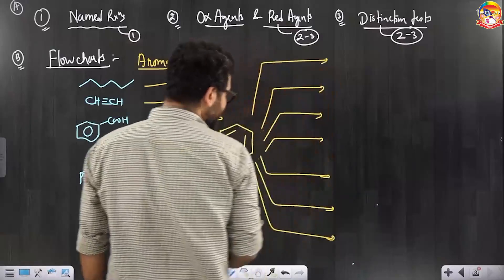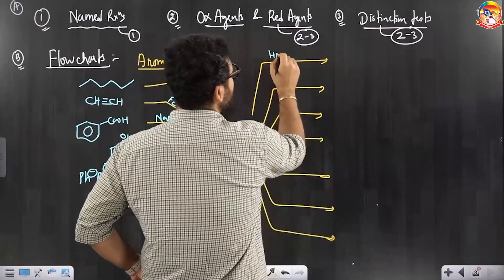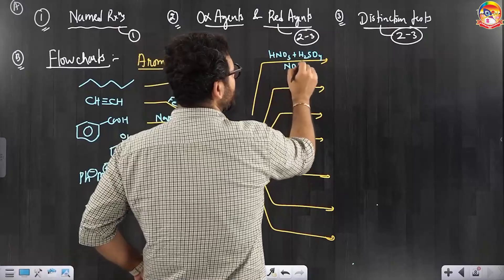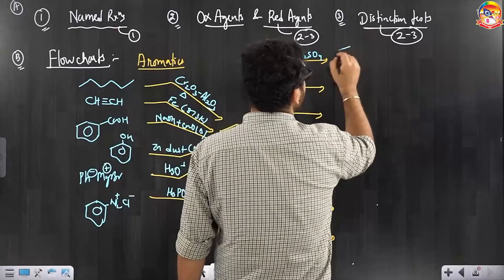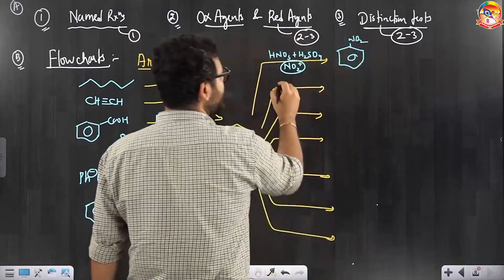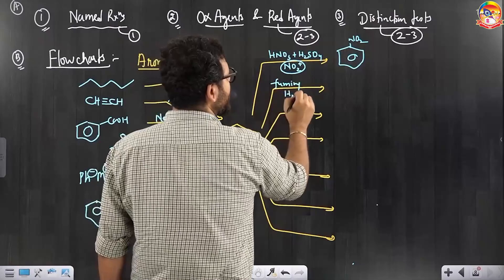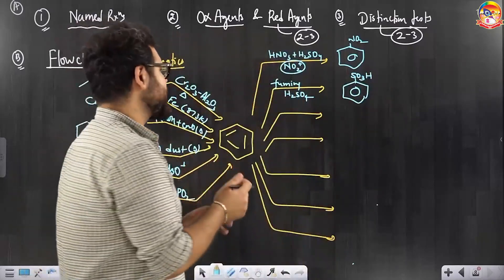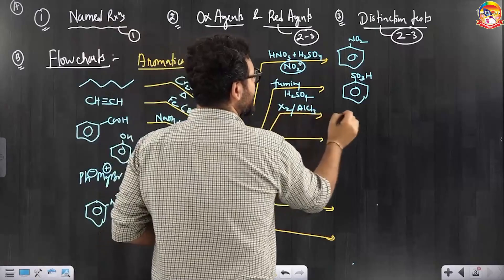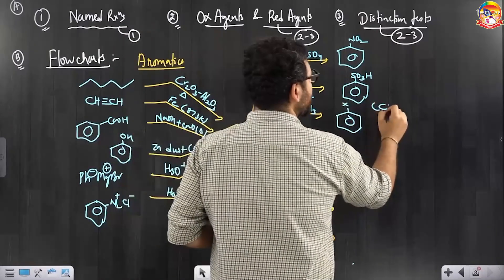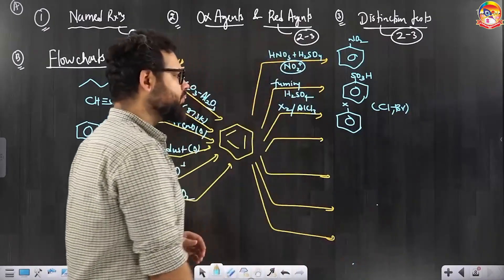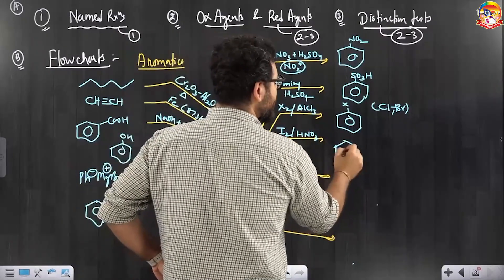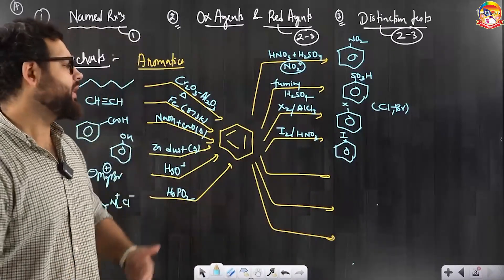We know that benzene being an aromatic system mostly shows electrophilic substitution reactions. Like nitration with HNO3 and H2SO4, where NO2+ will be the electrophile substituting the hydrogen — we get nitrobenzene. You can do sulfonation, for that you use fuming concentrated sulfuric acid, where benzene sulfonic acid will be formed. You would have seen halogenation reaction where you use halogen in the presence of AlCl3, where chlorine or bromine can be introduced. If you want iodination, you use I2 and HNO3. Like this, you can write all the reactions by looking at your notes or NCERT first, and then revise them every single day.